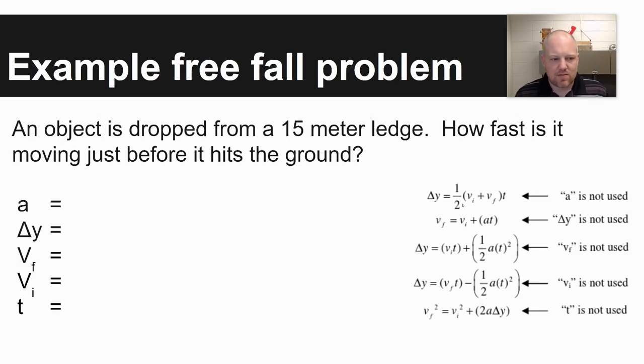First off, just like the kinematics problems, what I'd recommend is just go through and identify these different variables and what you're given in a problem. First we can assume in this problem, this is on Earth, that our acceleration is negative 9.8 meters per second per second. You can also use negative 10 as far as I'm concerned.